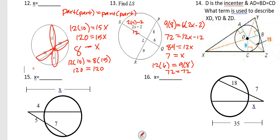For number 14: D is the center, and AD, ABD, and CD are equal because they are all radii of the circle. The term used to describe XD, YD, and CD is an angle bisector.